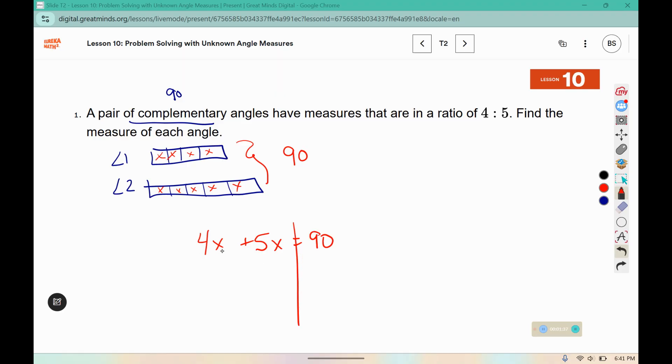We can combine like terms here. 4x plus 5x is 9x, and that equals 90. And we divide both sides by 9, and x equals 10. So this first angle would be 10, 20, 30, 40 degrees.